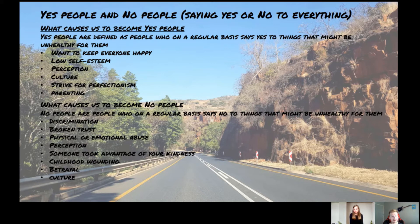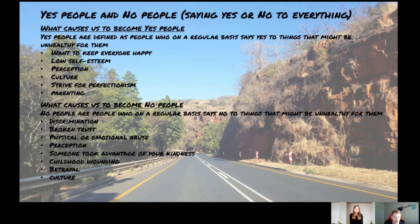What causes one to become a no person? This is quite an extensive list — it varies from discrimination, broken trust, physical and emotional abuse, the perception that you think other people have of you. If you think people have a negative perception of you, you would avoid them and just stay around yourself and not let anybody close. It could also be if somebody previously took advantage of your kindness, childhood wounding, betrayal, or culture.